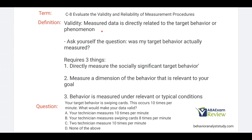Validity — validity is measured data directly related to target behavior or phenomenon. This just says you're actually measuring what you intend to measure. If you ask your technician to measure on-task behavior and they're measuring on-task behavior, that measurement is valid. So ask yourself the question: was my target behavior actually measured? Valid data requires three things.